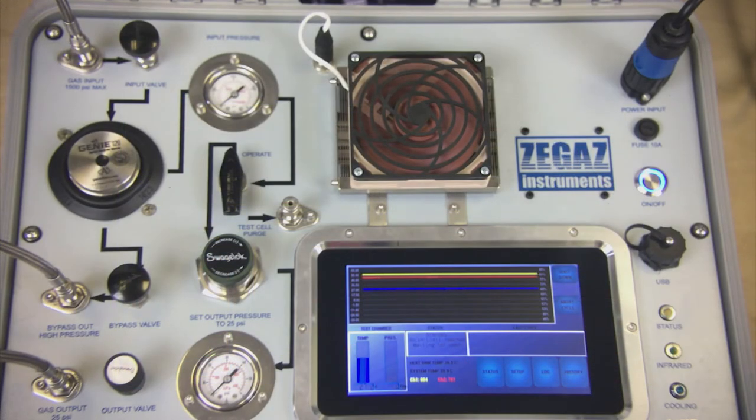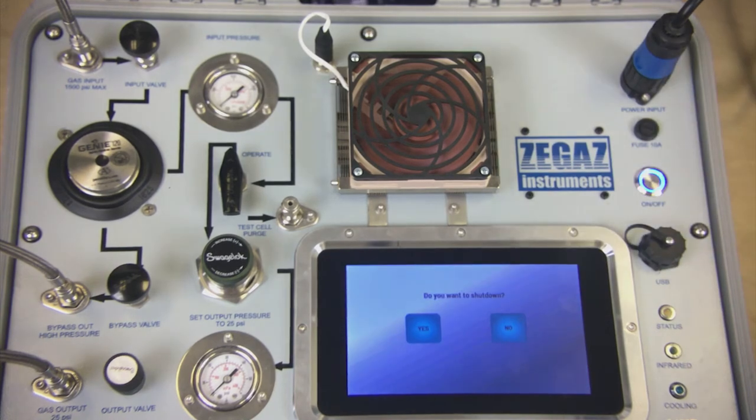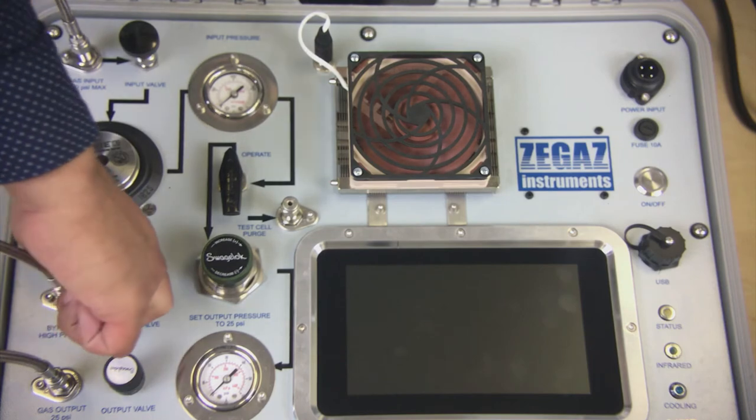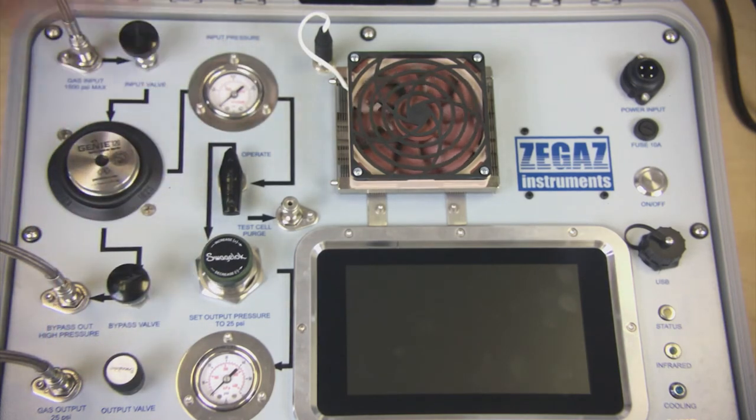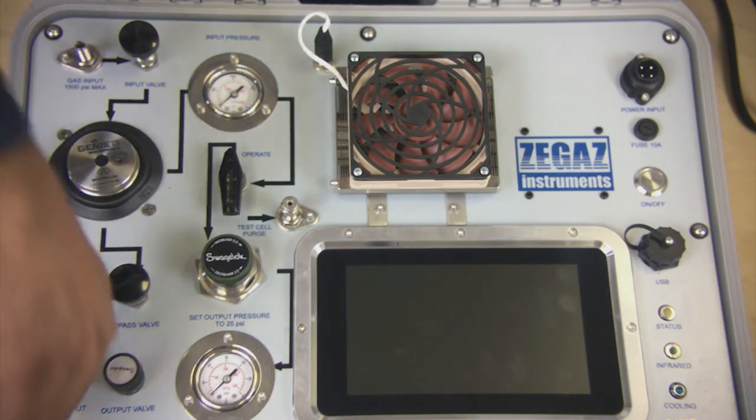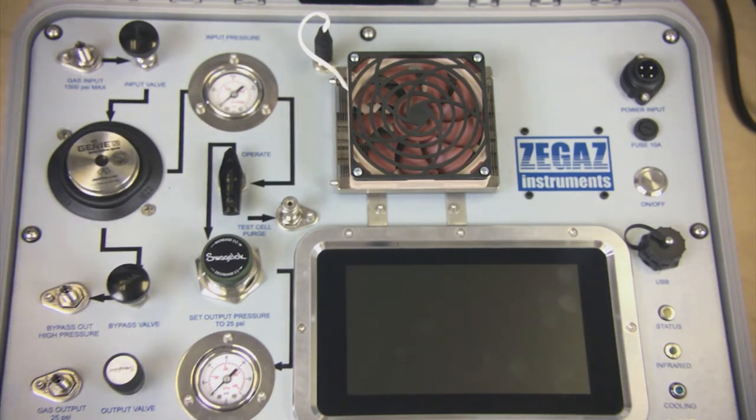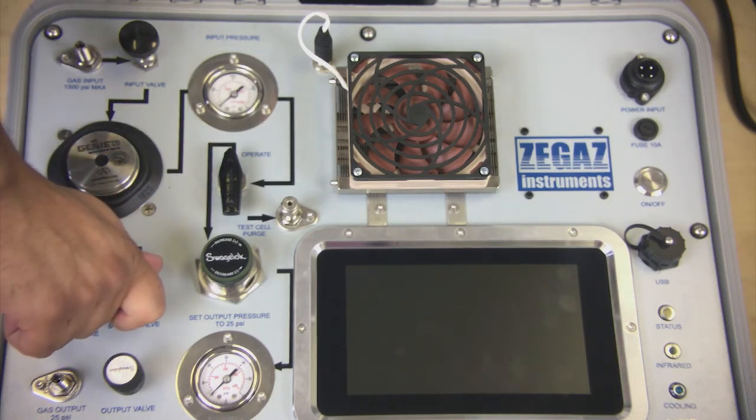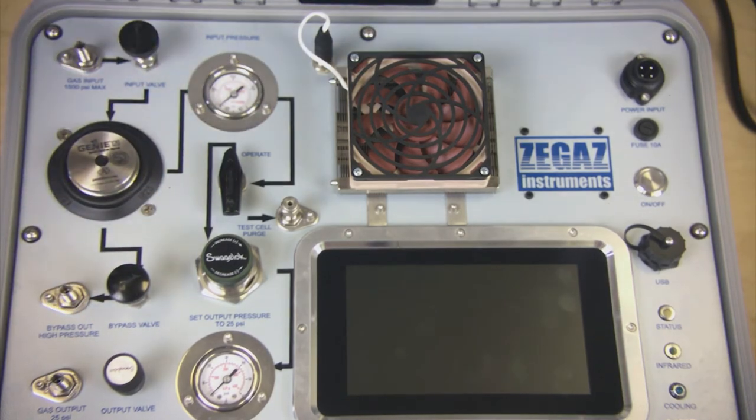Once the measurements have been completed and you are ready to power down the unit, press the shutdown button and press yes when prompted. Turn off power when the screen goes blank and disconnect power from the unit. Relieve pressure by opening up the bypass valve for a few seconds. Close all the valves completely and disconnect your gas lines. Ensure the system has been depressurized by opening up the bypass valve momentarily to relieve any residual pressure. Close all the valves and close the unit and move on to the next test location.